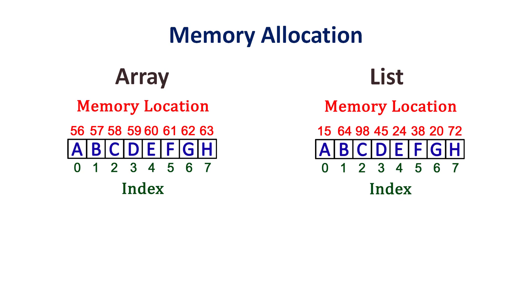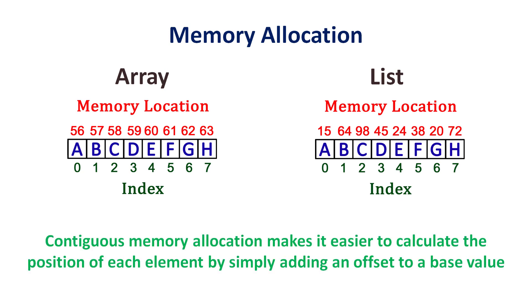Whereas, in an array, getting the elements is much easier compared to a list. Contiguous memory allocation makes it easier to calculate the position of each element by simply adding an offset to a base value. Here, the base value is 56 and the offset value is 1.